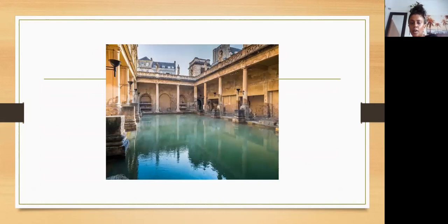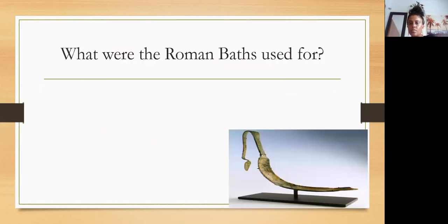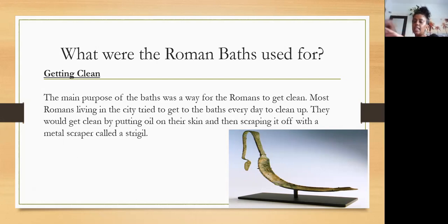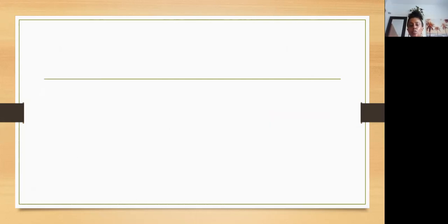Here is another picture of the Roman baths. So what were the Roman baths actually used for? We know that today we have showers and bathtubs to clean ourselves — let's see what we can find out. The main purpose of the baths was a way for the Romans to get clean. Most Romans living in the city tried to get to the baths every day. They would get clean by putting oil on their skin and then scraping it off with metal scrapers called a strigil. You can see a strigil in the picture — they would put the oil on their skin, scrape off any excess skin or dirt, and then wash it off in the water.